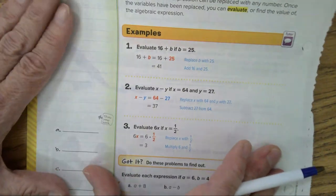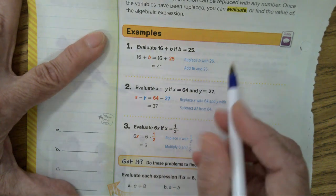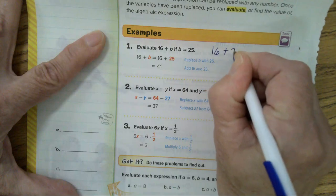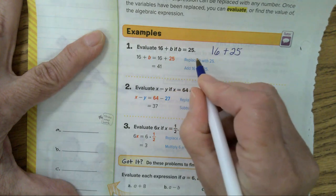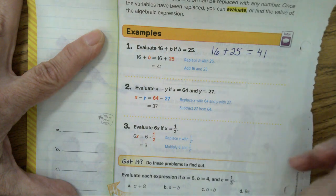Let's look at the examples below. Evaluate 16 plus b if b is 25. Well, kids, let's write this down. 16 plus 25. That's what that means. And your sum is going to be 41.